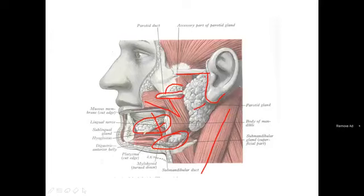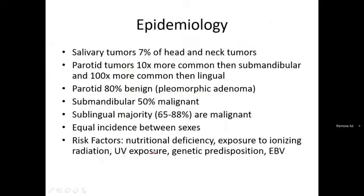Also visible in the diagram are the hyoglossus muscle, the digastric bellies, and the platysma layer.